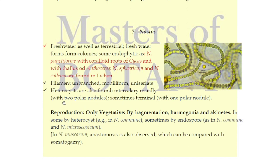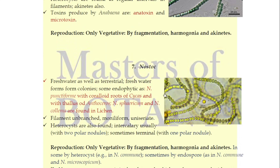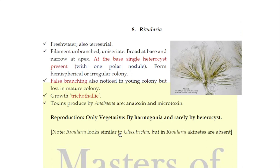In the intercalary heterocysts — i.e., those inside the filament — two polar nodules are found. In terminal heterocysts, one polar nodule is found. Regarding reproduction: vegetative reproduction occurs by fragmentation, hormogonia, akinetes. Endospores are also formed. Somatic meiosis also occurs here, so genetic variation is seen.